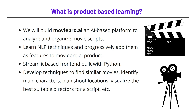Let's get to the concept of product-based learning. Traditional courses teach theory and then have you do a small project. We'll take a slightly different approach — we will essentially build a product and then learn algorithms, using them to develop features in that product. The product we are going to build is called MoviePro.AI, an AI-based platform to analyze and organize movie scripts, as if you were building it for major production houses like Paramount Pictures, Disney, or Universal Studios.